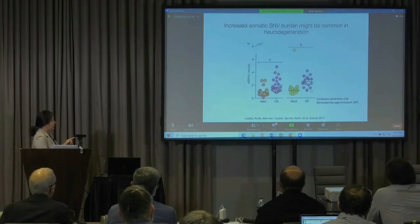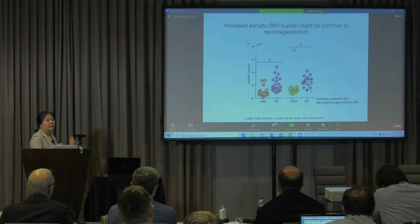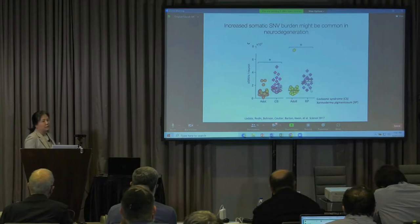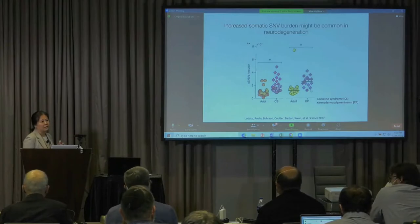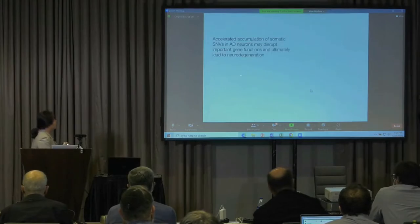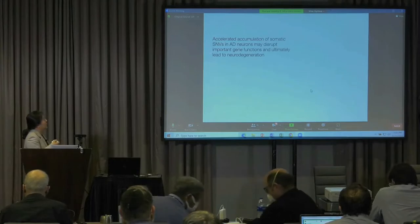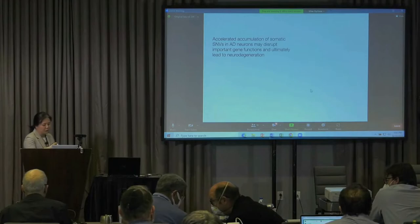In our earlier studies, we also observed increased somatic mutation burden in two neurodegenerative conditions caused by inherited mutations: xeroderma pigmentosum and Cockayne syndrome. Recently, we expanded our analysis to more late-onset sporadic neurodegenerative conditions and see consistent patterns of increased somatic mutations. In summary, we think accelerated accumulation of somatic mutations in AD neurons may disrupt important gene functions and could be a cause of neurodegeneration.